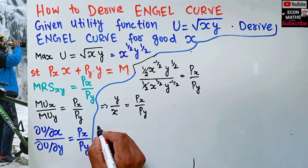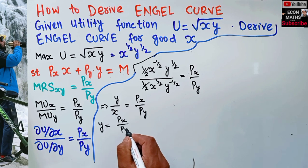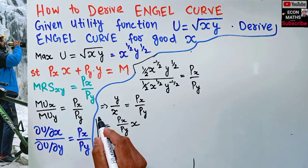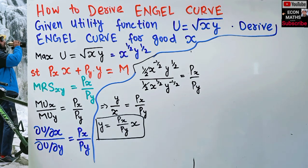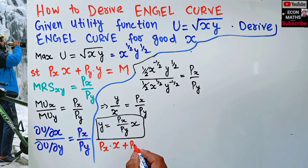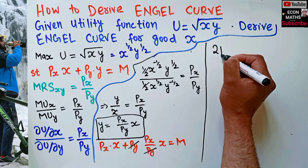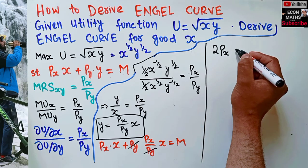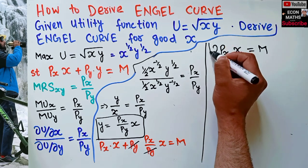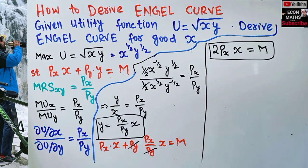Solving for y: y = (Px/Py)·x. To find the Engel curve, we plug this value of y into the budget constraint. So: Px·x + Py·(Px/Py)·x = m. Here Py cancels, giving Px·x + Px·x = m, which means 2·Px·x = m. This is our Engel curve.